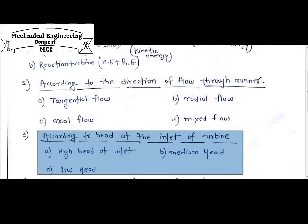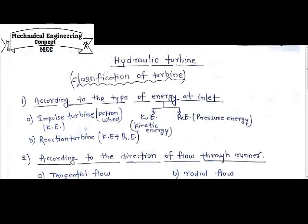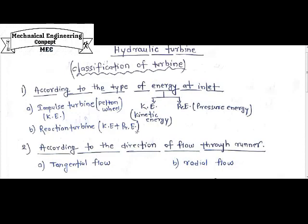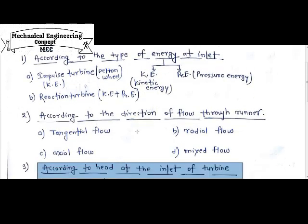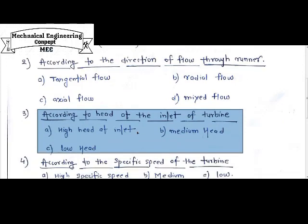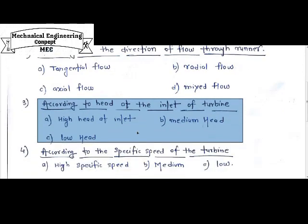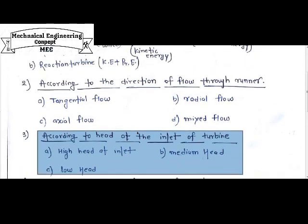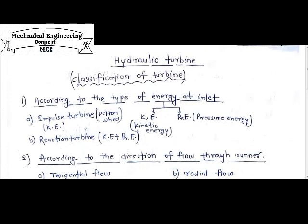So this is the basic categorization of the hydraulic turbine: by type of energy at inlet, flow direction through the runner, head at inlet, and specific speed of the turbine. I hope you liked this video. If you have any query, please comment below, and don't forget to subscribe to my channel and press the bell icon. Thank you.